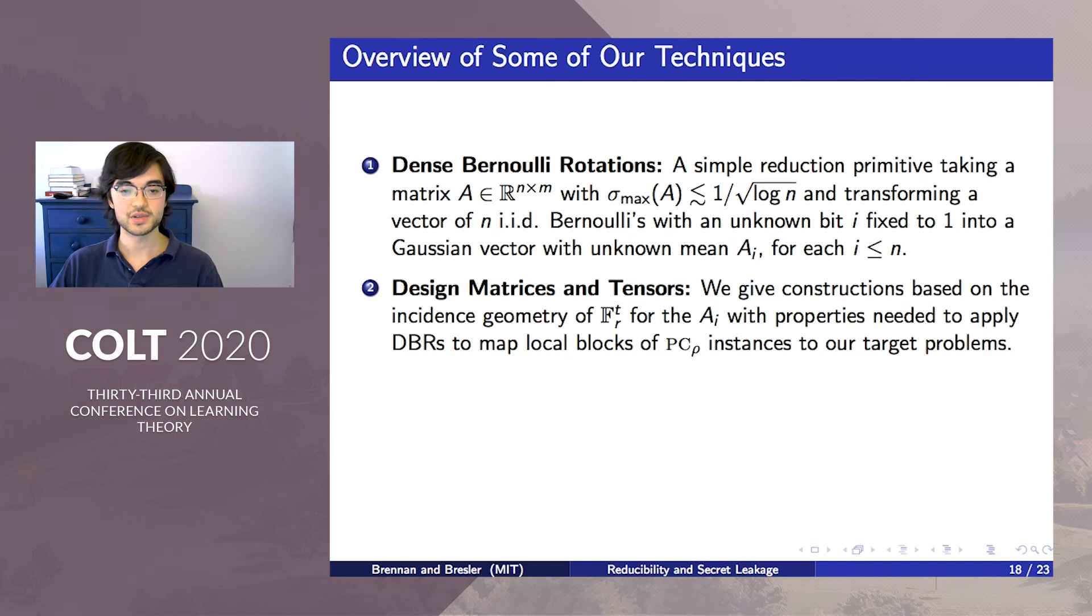In our reductions, this choice is constrained by features of the target distribution. Its singular values often directly impact how tight the reduction is, and hence choosing these ai's is crucial. We give constructions based on the incidence geometry between points and hyperplanes in F_q to the t that turn out to satisfy the desiderata for the ai across many of our reductions.